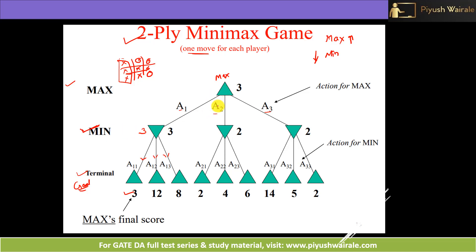Now if Max plays action a2, Min can take three actions from that point and will try to minimize the score. The minimum value there is 2, so the value of that Min node is 2. Similarly, if Max plays action a3, Min can perform actions a31, a32, a33, and the lowest value is again 2, so that node's value is also 2.